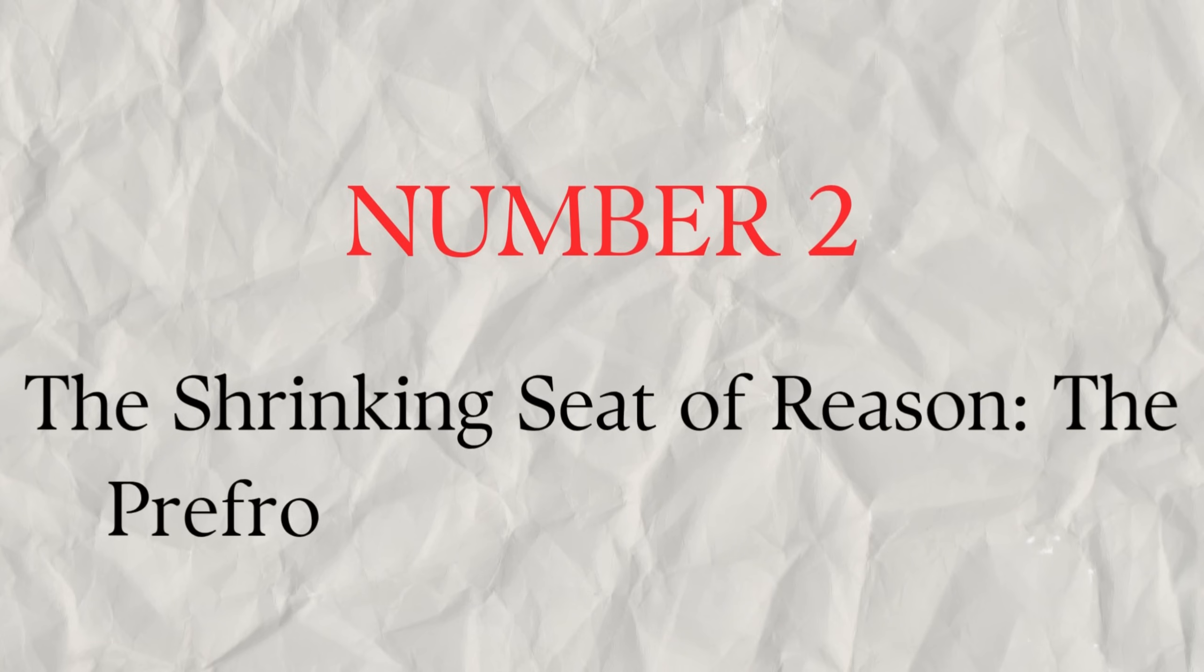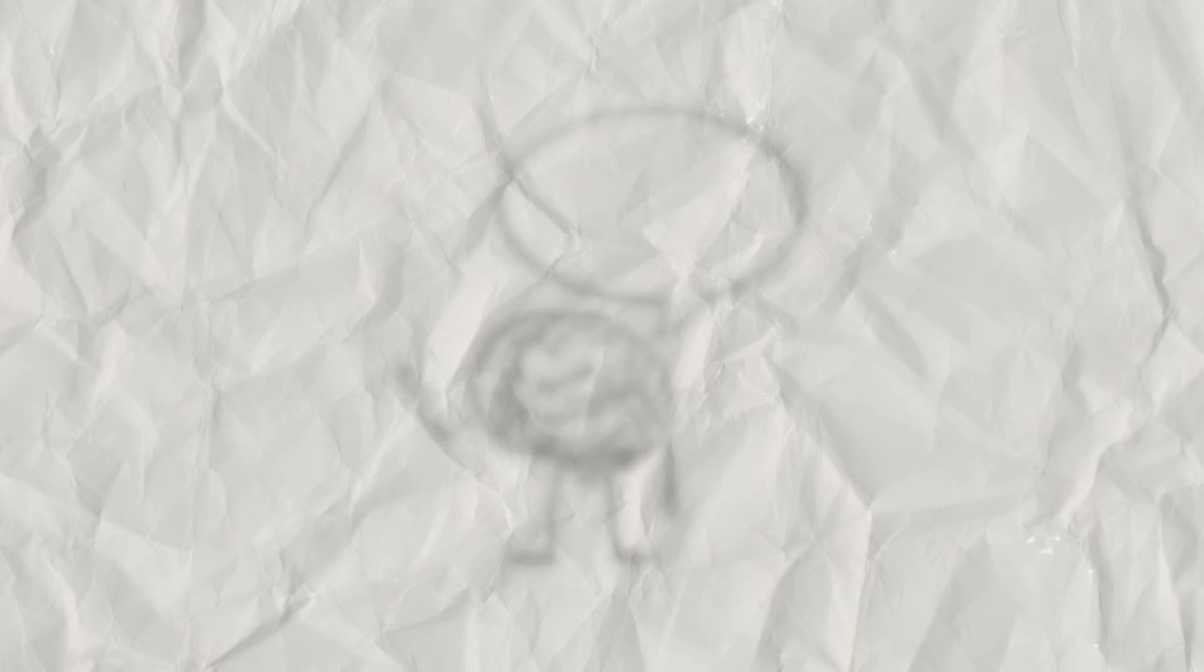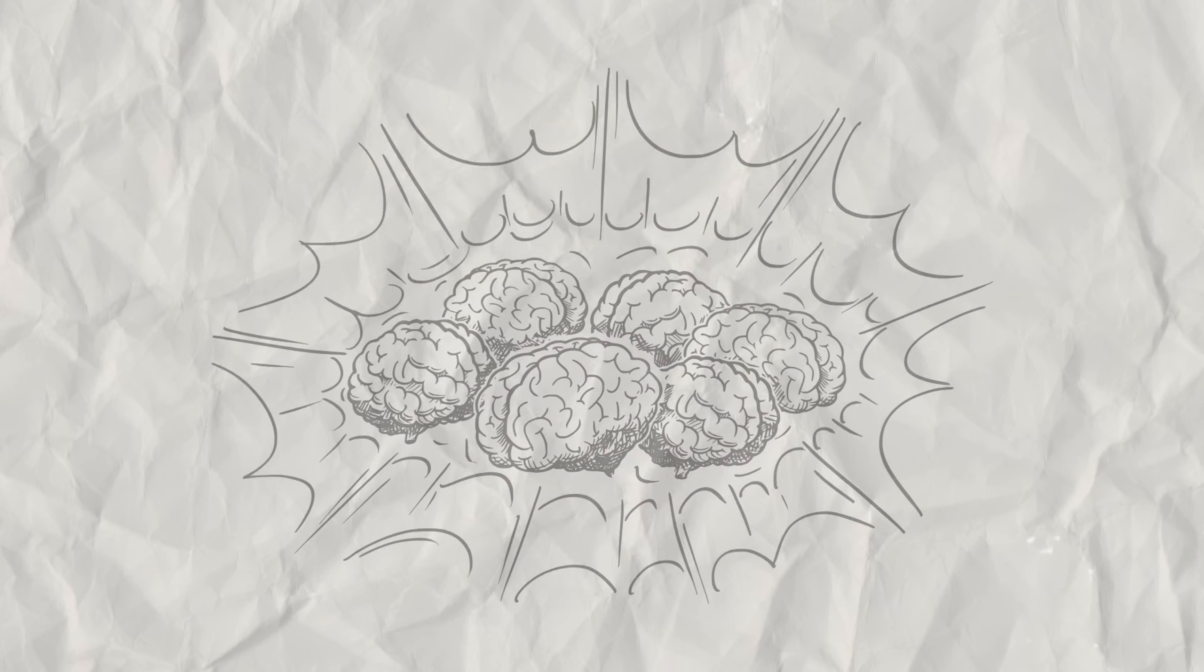Number two, the shrinking seat of reason. The prefrontal cortex takes a hit. While your amygdala is working overtime, another crucial part of your brain, the prefrontal cortex, might be struggling.